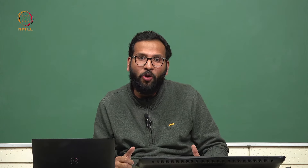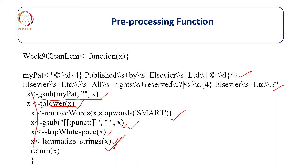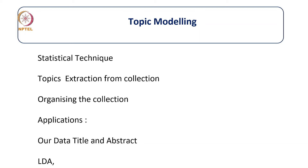Now we will do the topic modeling on this pre-processed text data. Topic modeling is a kind of text mining that identifies patterns in the text data. It is a statistical technique that processes text data and identifies the topics in a collection of large volumes of documents. It works in an unsupervised way and helps in organization and retrieval of documents. It has various applications in different domains — in libraries, it helps in analyzing books and journal content to organize them.